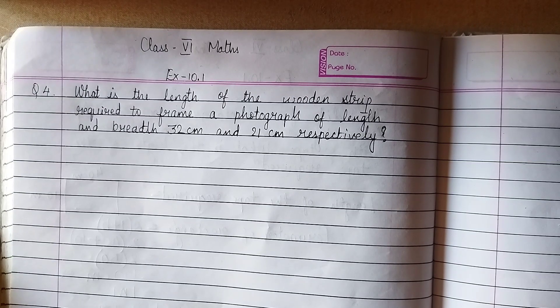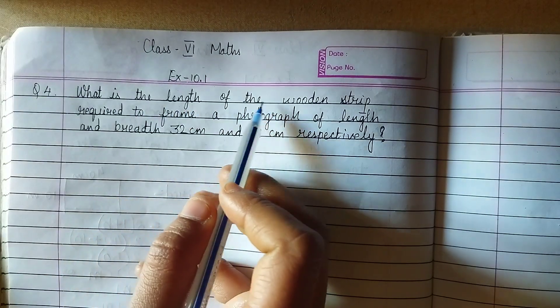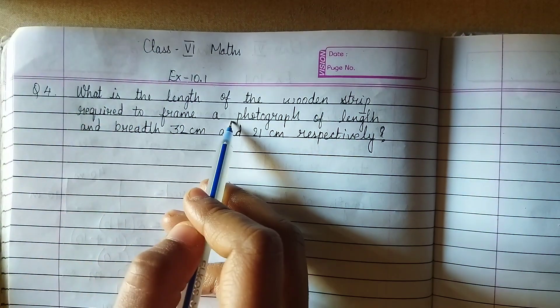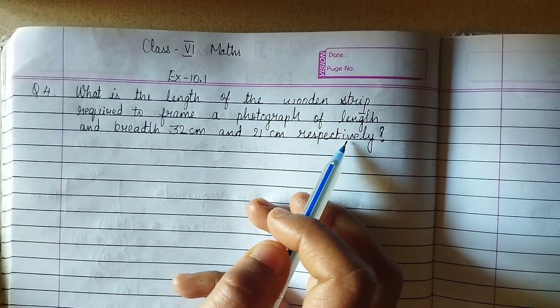Exercise 10.1 Question 4: What is the length of the wooden strip required to frame a photograph of length and breadth 32 cm and 21 cm respectively?